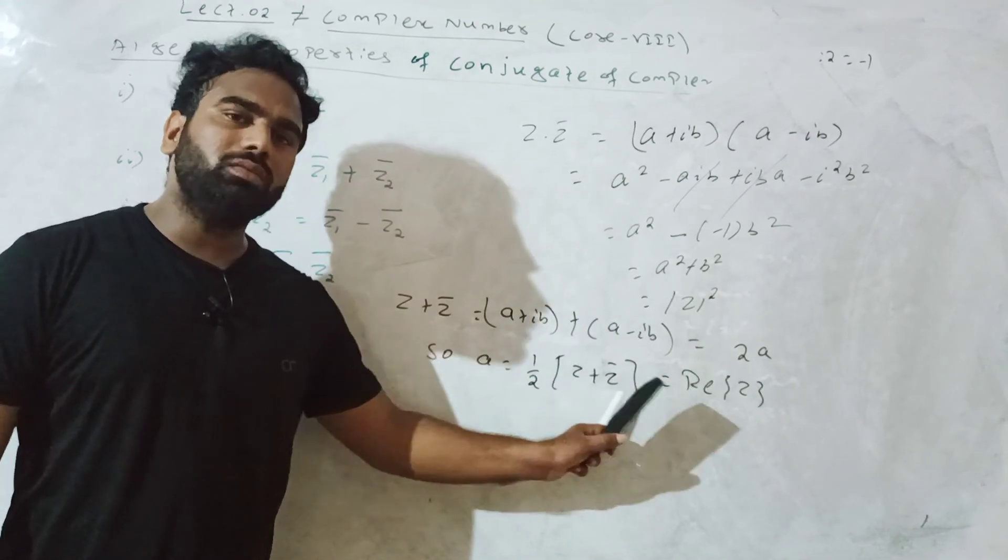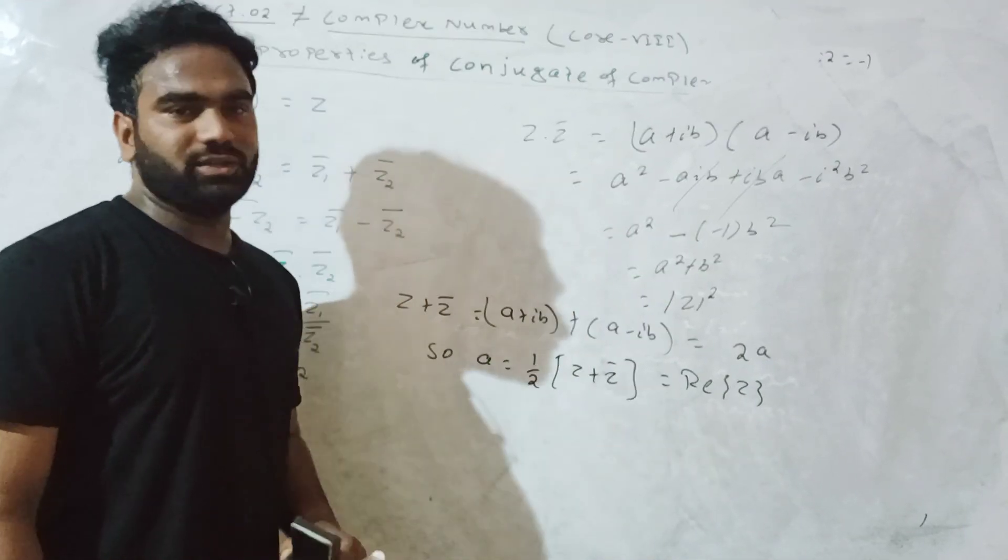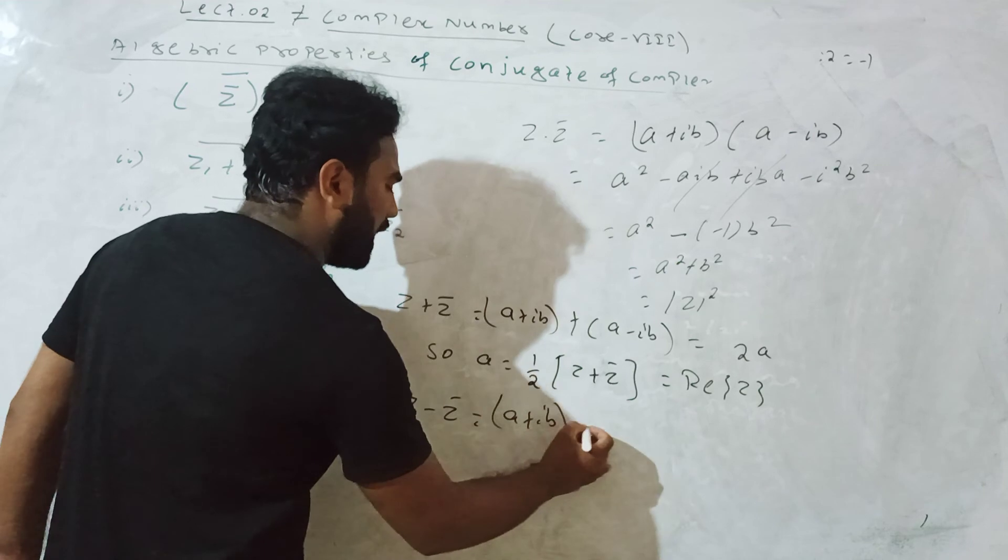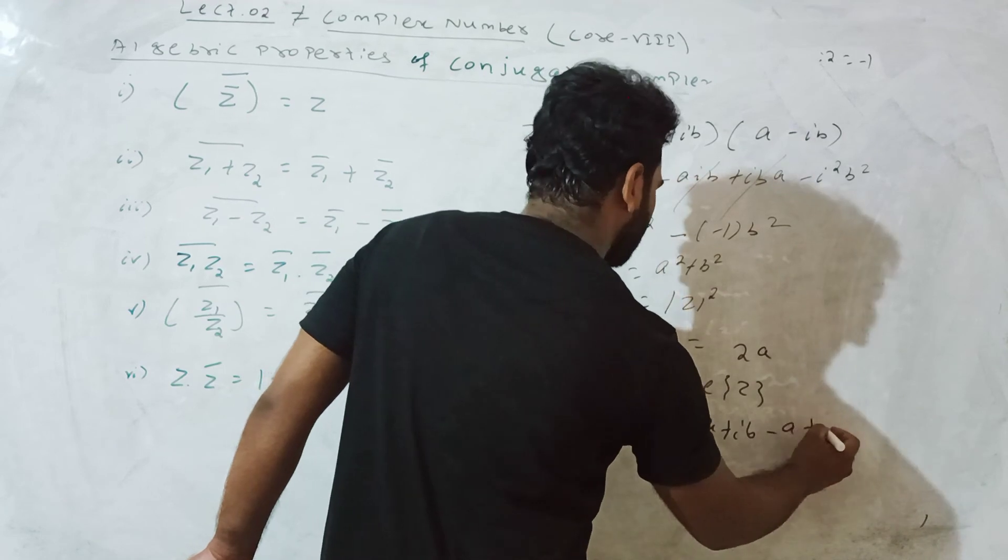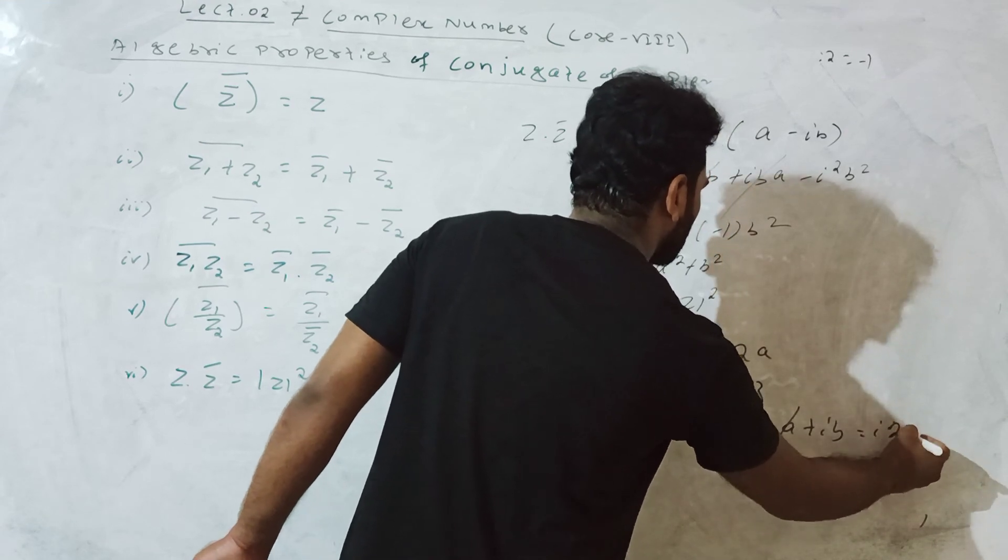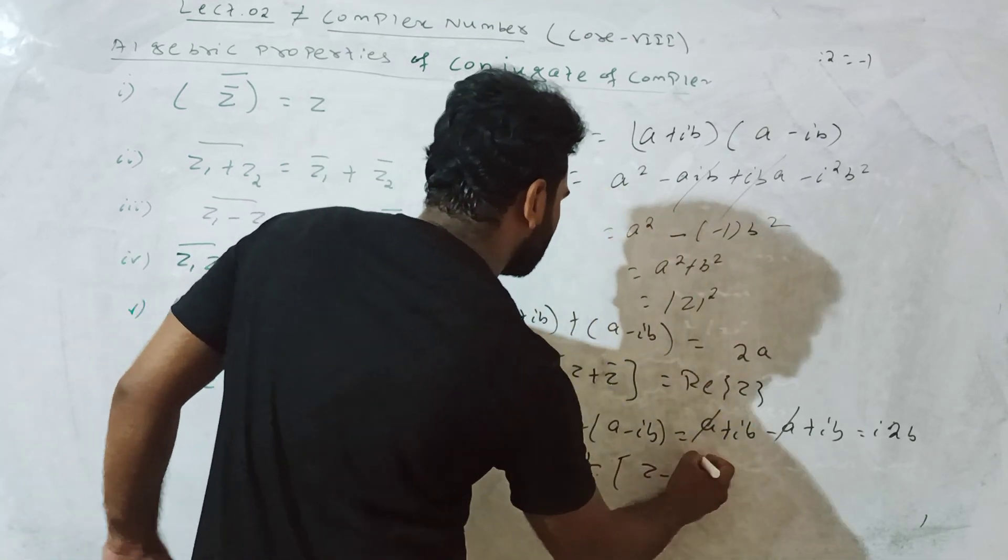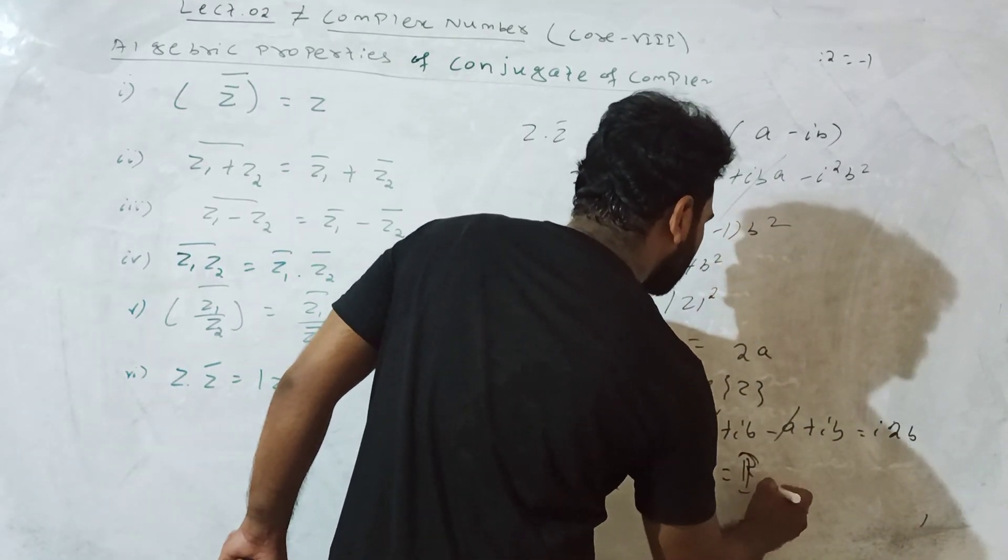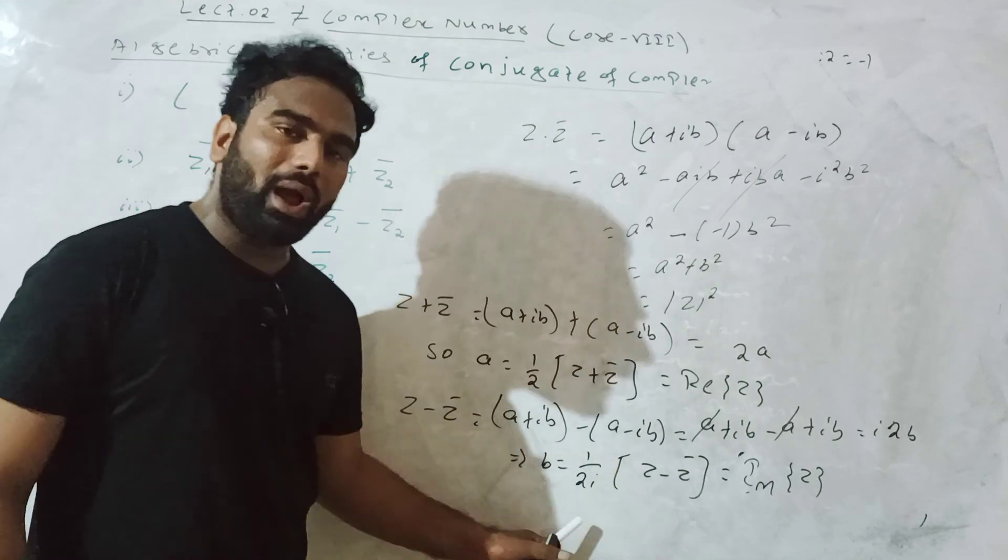Additional formulas: the real part equals one half times z plus z bar, and the imaginary part equals one over two i times z minus z bar.